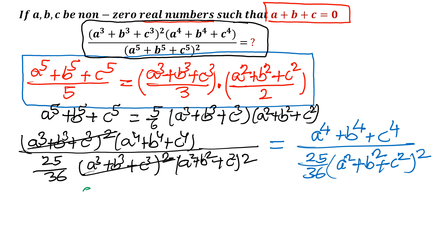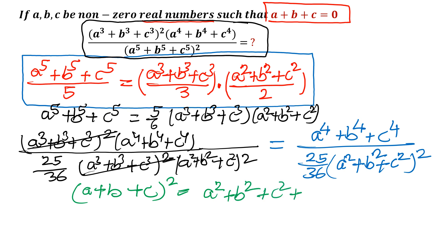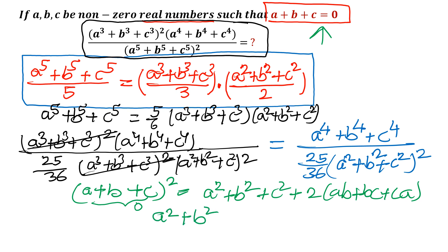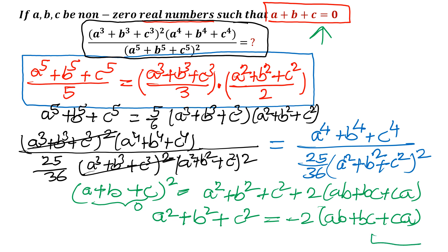What is ultimately left we have to simplify further: A to the power 4 plus B to the power 4 plus C to the power 4, over 25 over 36, times A squared plus B squared plus C squared, whole square. Let us begin with the A plus B plus C whole square identity. So I can write: A squared plus B squared plus C squared equals A squared plus 2 times AB plus BC plus CA. It is given that A plus B plus C equals 0, so the left-hand side is 0. Therefore A squared plus B squared plus C squared equals minus 2 times AB plus BC plus CA. Let me call this equation number 1.